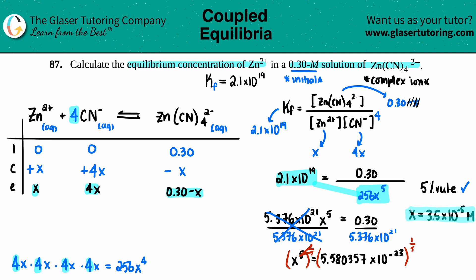Now we're going to answer the question. They wanted the equilibrium concentration of zinc, the Zn²⁺, which was just x. So the concentration of the zinc 2 plus is 3.5 times 10 to the negative 5th molarity, and we are done.